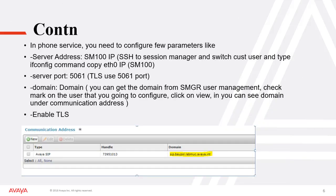You will need to configure a few parameters like server address. In server address, you have to add the Session Manager SM100 IP address. If you are unsure about the IP address, you can do ifconfig on Avaya Aura Session Manager and copy the id0 IP address. In the server port, because we are using TLS, we have to put 5061. For domain, you have to put in the domain name as mentioned in the SMGR user management. Enable TLS in order to select the TLS option.